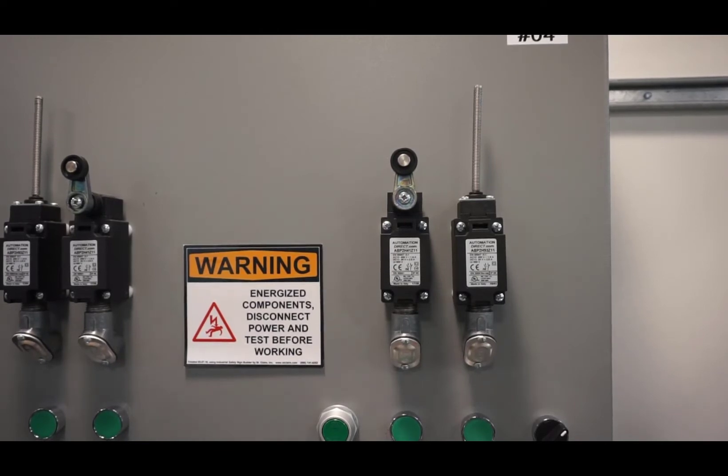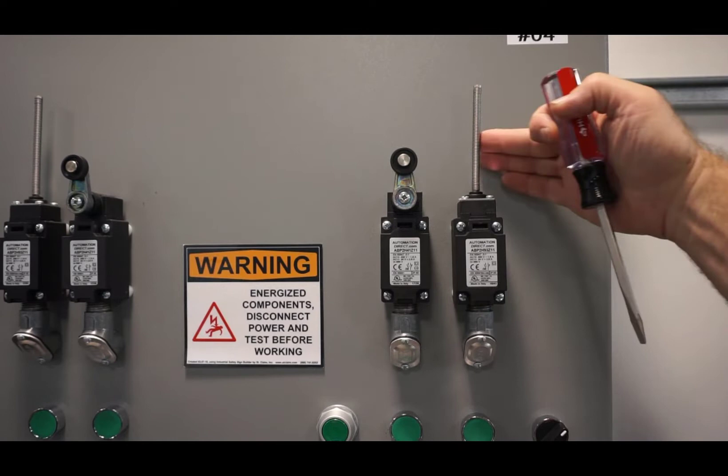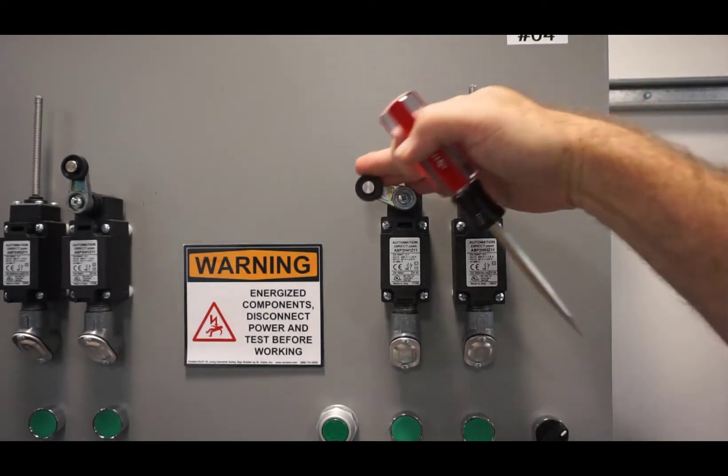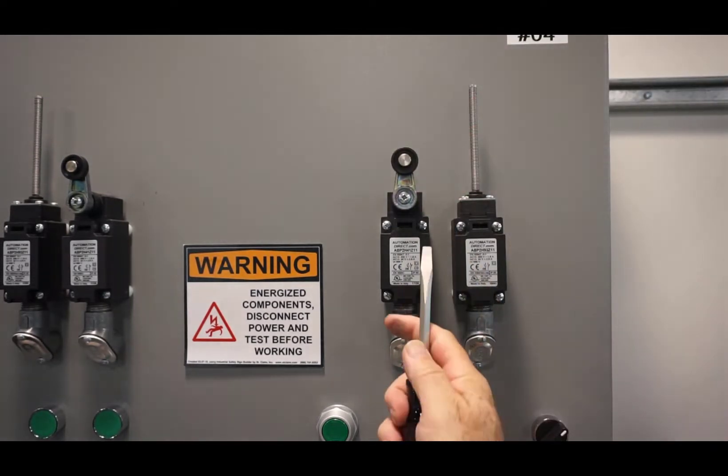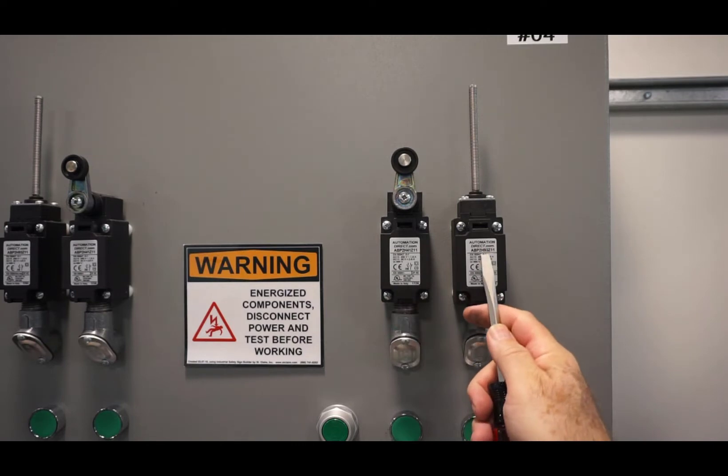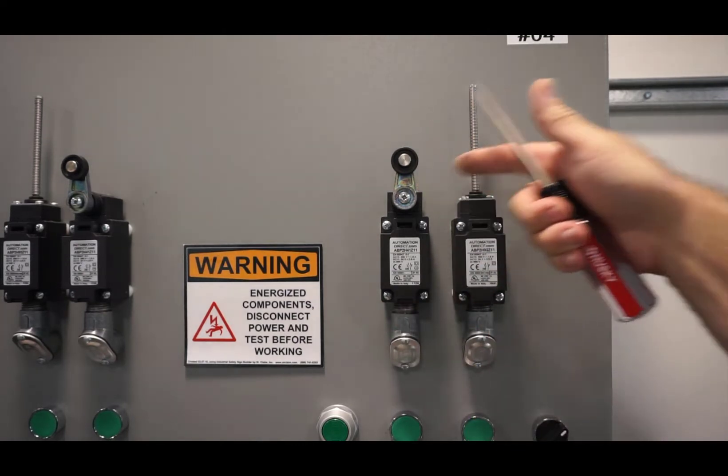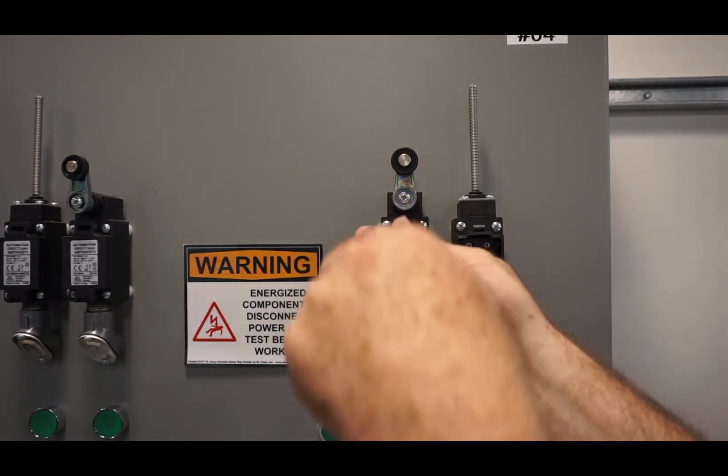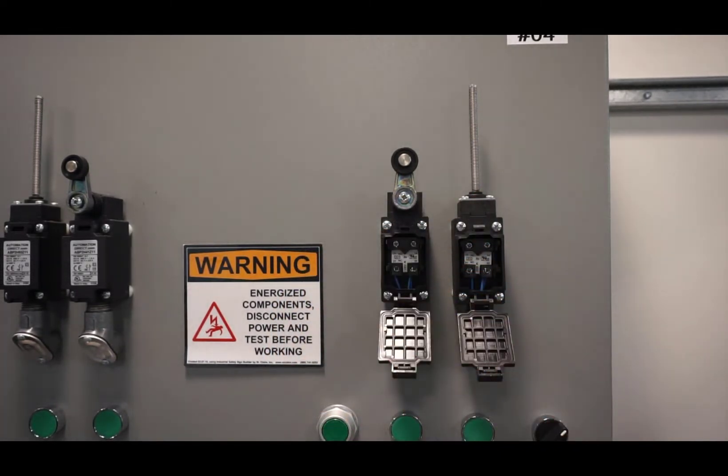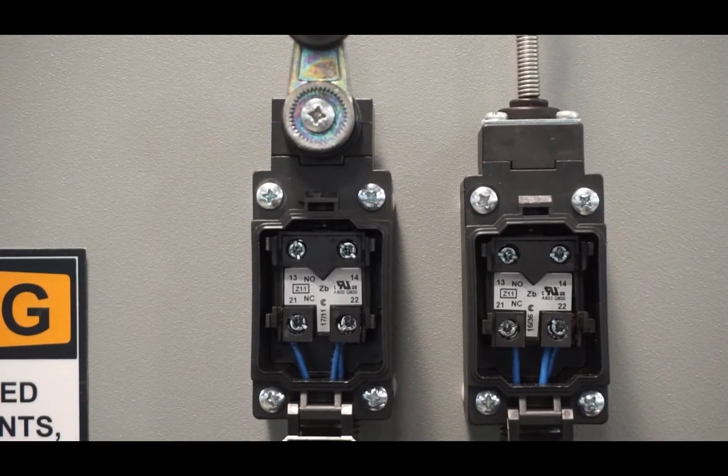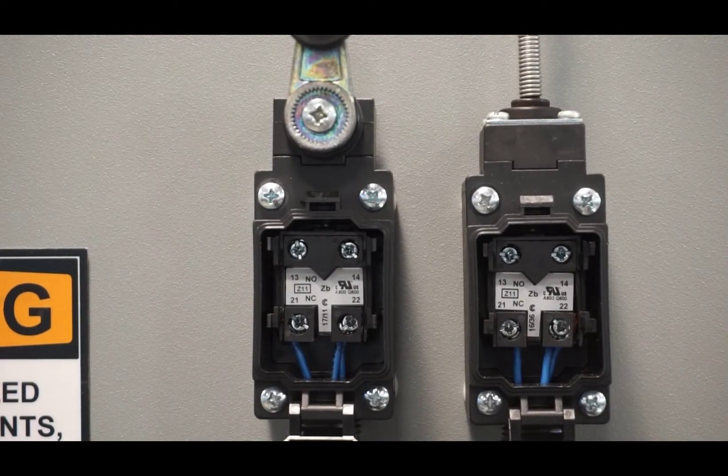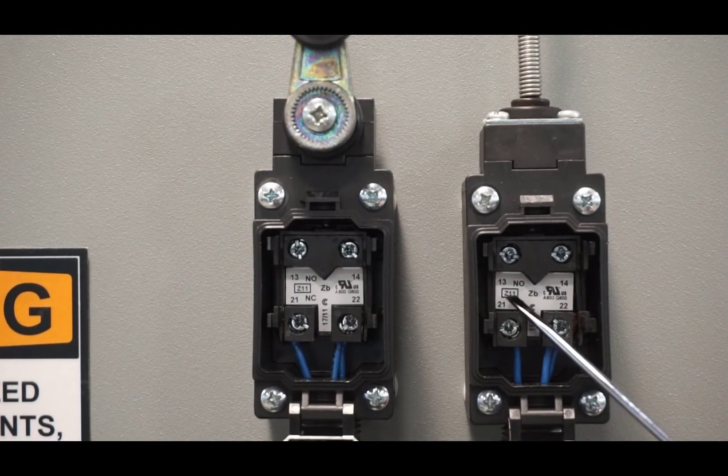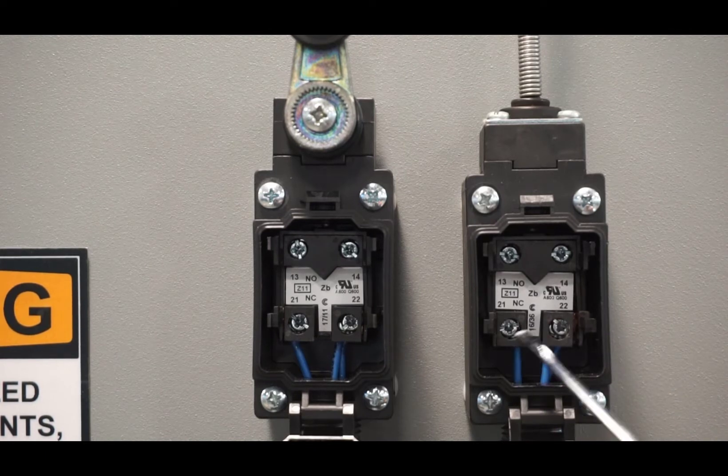Here's your limit switches. The limit switches are the same part number. The actuators, roller actuator and whisker actuator are different part numbers. They open up with a screwdriver, just pop it open. You can see here 13 and 14 are the normally open contacts, and 21 and 22 are the normally closed contacts.